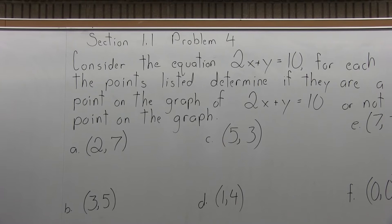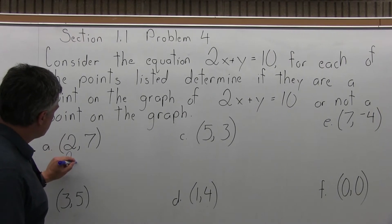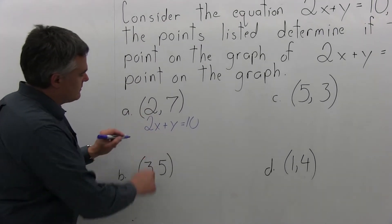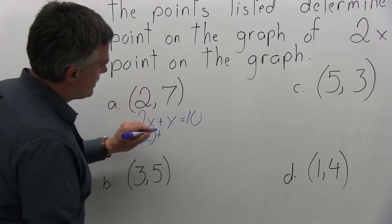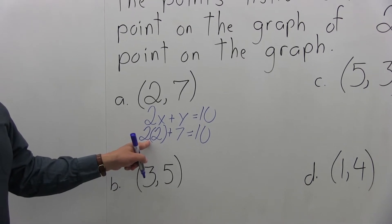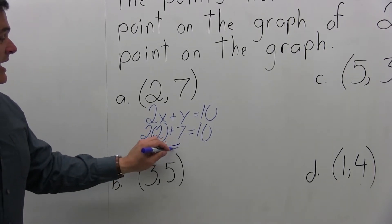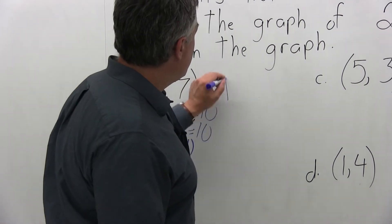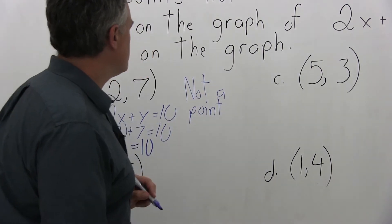Part A: determine if the point (2, 7) is a point on the graph of 2x plus y equals 10. Starting with the equation 2x plus y equals 10, the x-value of 2 goes in for x, giving us 2 times 2 plus 7 equals 10. The 2 times 2 is 4, plus 7 more gives 11 on the left side, which is not equal to 10. Therefore, (2, 7) is not a point on the graph.